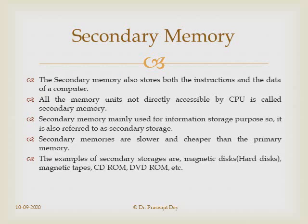Secondary memory also stores both instructions and data. All memory units not directly connected with the CPU are called secondary memory. It is primarily used for information storage, and is also named secondary storage. Secondary memory is slower and cheaper than primary memory. Examples include magnetic disk, magnetic tape, CD-ROM, DVD-ROM, etc.